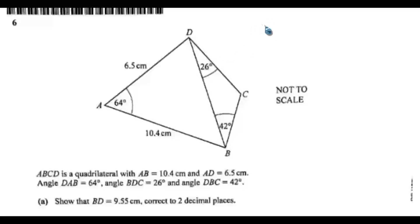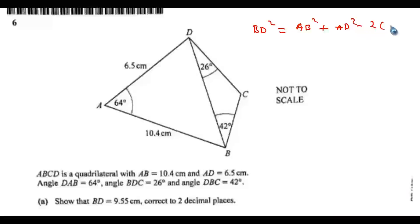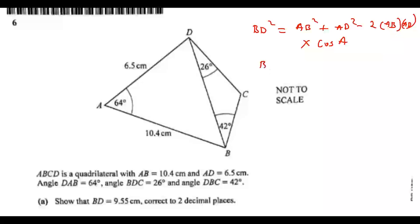Using the cosine rule: BD² equals AB² plus AD² minus 2 times AB times AD times cos A. So BD² equals 10.4 squared plus 6.5 squared minus 2 times 10.4 times 6.5 times cos 64°.